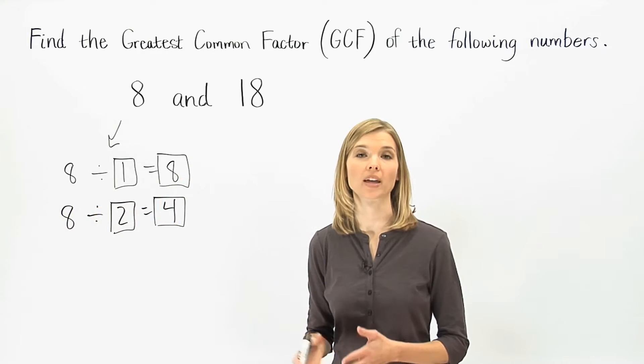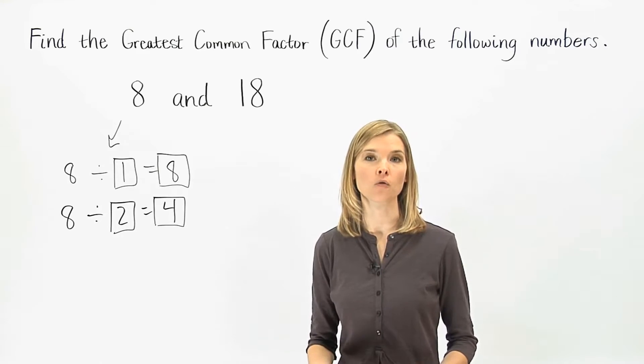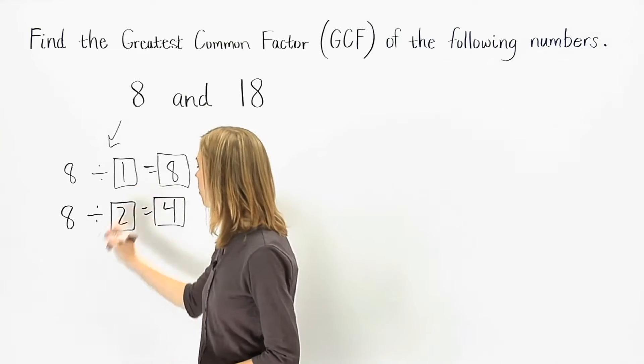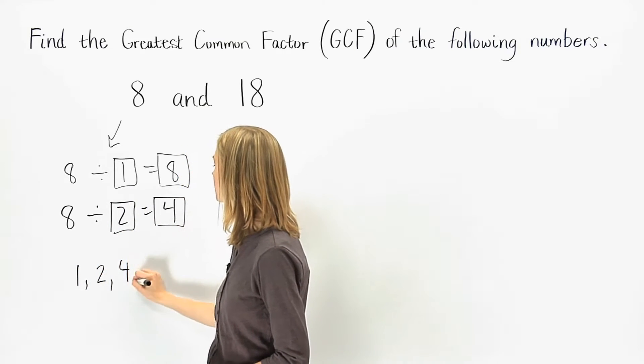However, if we continue to divide 8 by 3, 4, 5, and so on, we won't find any new factors. So the factors of 8 are 1, 2, 4, and 8.